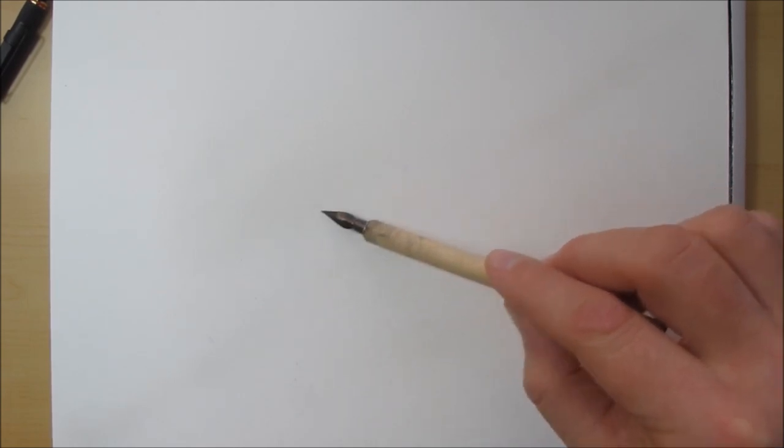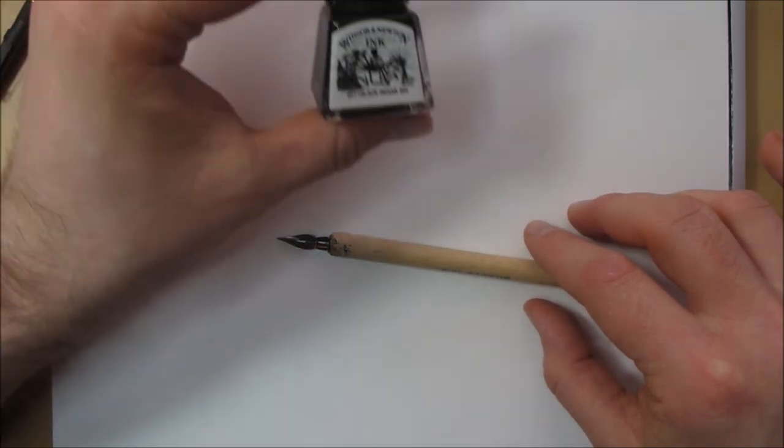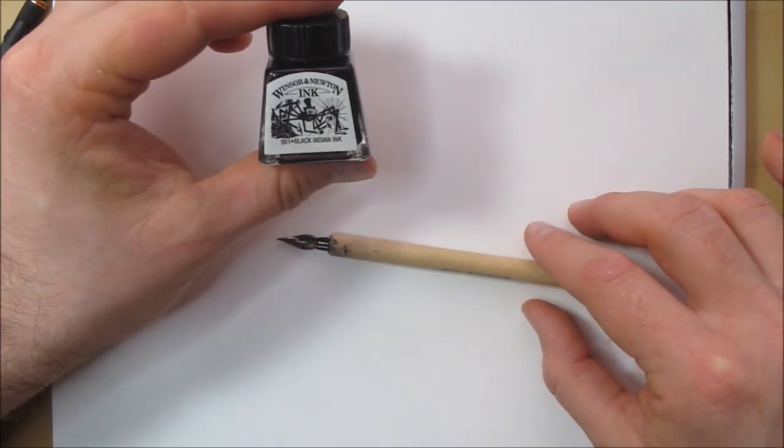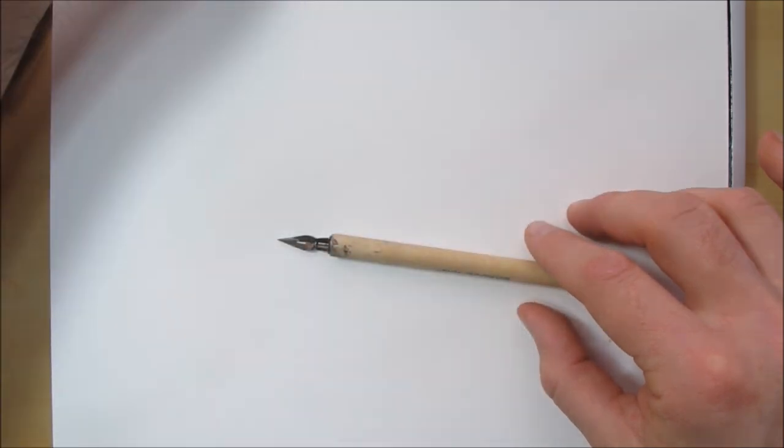The ink that Quentin Blake uses tends to seep into this style of paper a little bit too much, so the lines become very soft and blurry, which I don't particularly want. So I'll probably just use a standard black Indian ink such as this one.